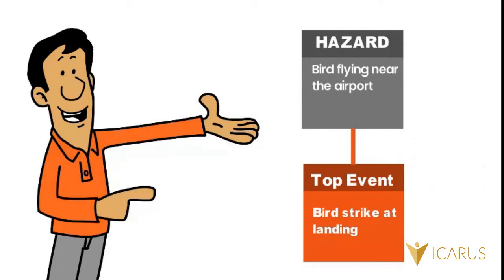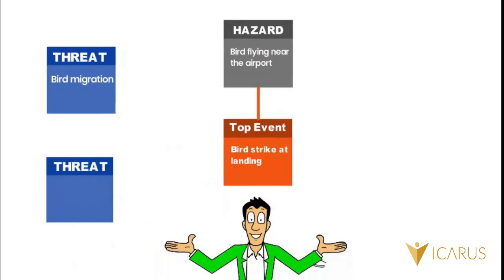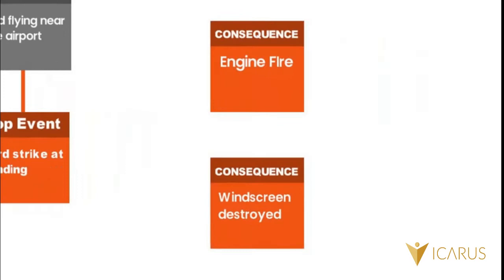Once the top event has been identified, we can define threats on the left side of the bowtie and consequences on the right side. Threats are factors that could cause the top event, and consequences are potential unwanted events resulting from the top event.